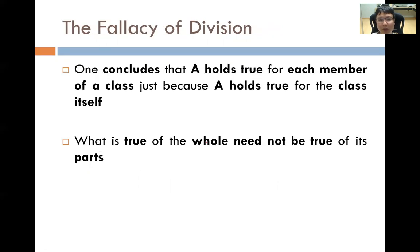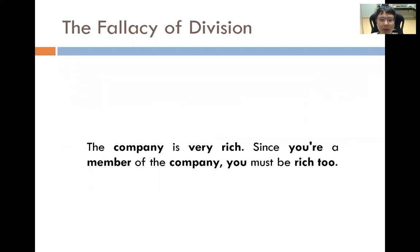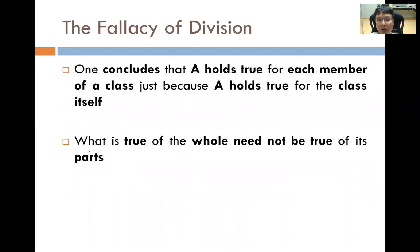The fallacy of division: one concludes that A holds true for each member of a class just because A holds true for the class itself. What is true of the whole may not be true of its parts. For example: the company is very rich — since you are a member of the company, you must be rich too. Like if you work for Google, which is very rich, does that mean every employee is definitely rich? It is not true. This is the fallacy of division.